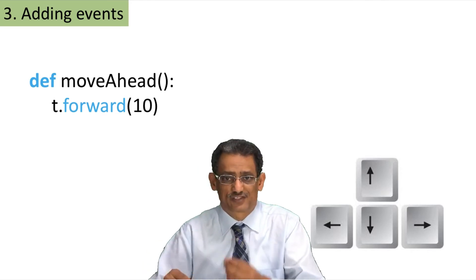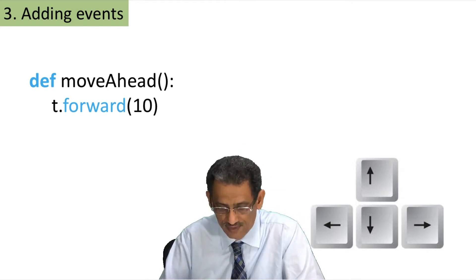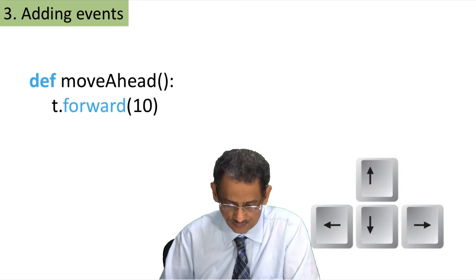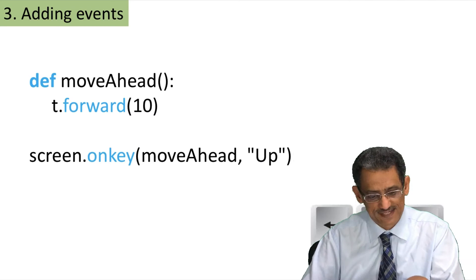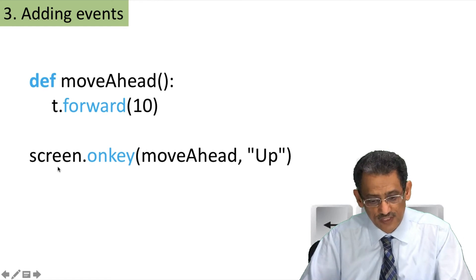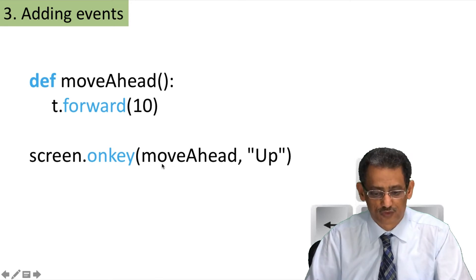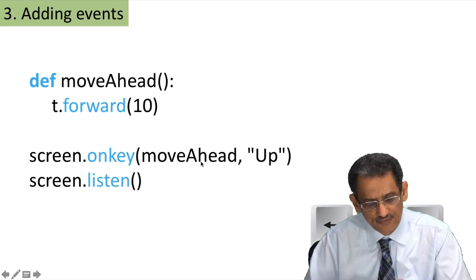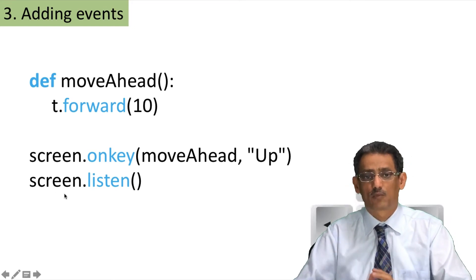Now we have the function — how can we link it to the user's actions? When the user presses the arrow up, how does it move forward? Python's turtle has two important functions. The first one is called on_key. Remember the screen variable we created? We use screen dot on_key, and when the user clicks the arrow up, the function move_ahead will be called.